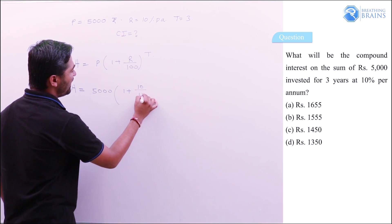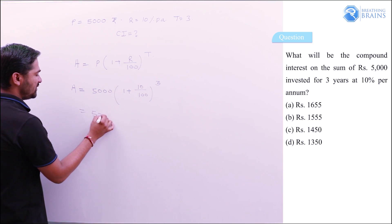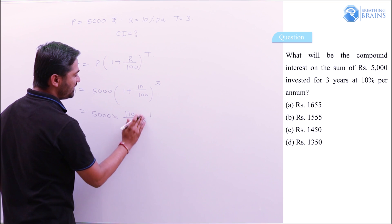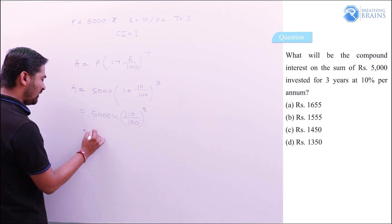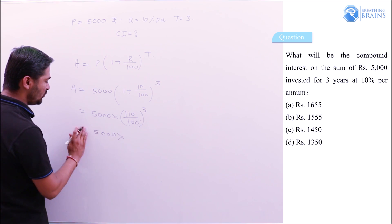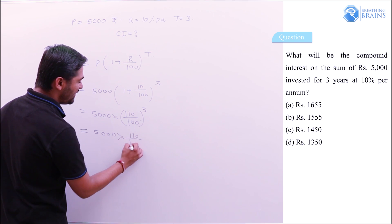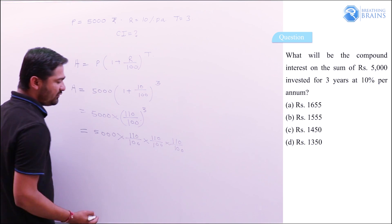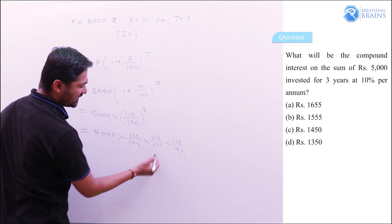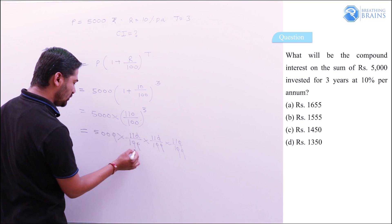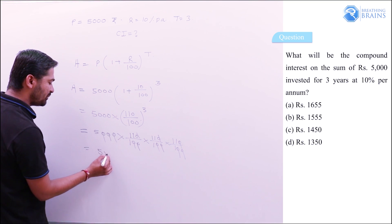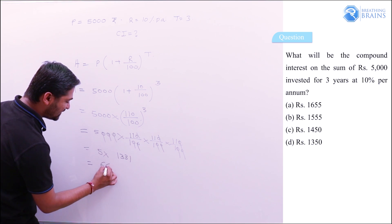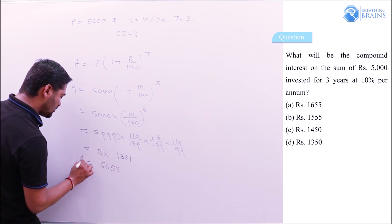Amount = 5,000 × (110/100)^3, which expands to 5,000 × (110/100) × (110/100) × (110/100). Cancelling zeros, we get 5 × 11³. Since 11³ = 1,331, multiplying by 5 gives ₹6,655 as the amount.